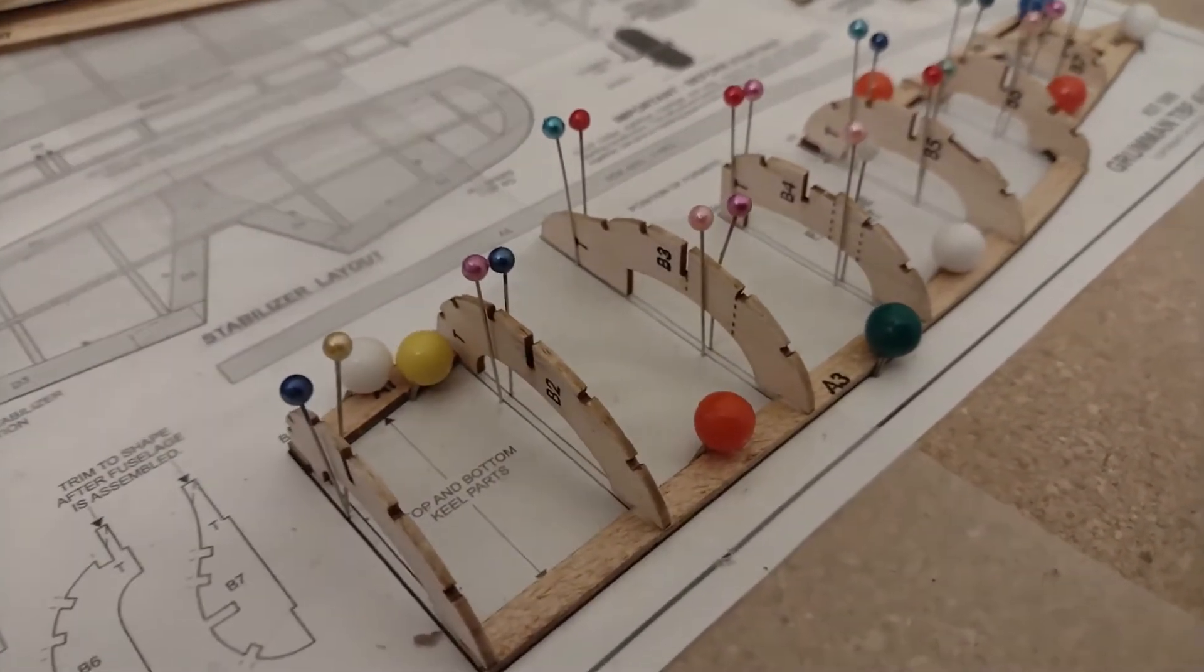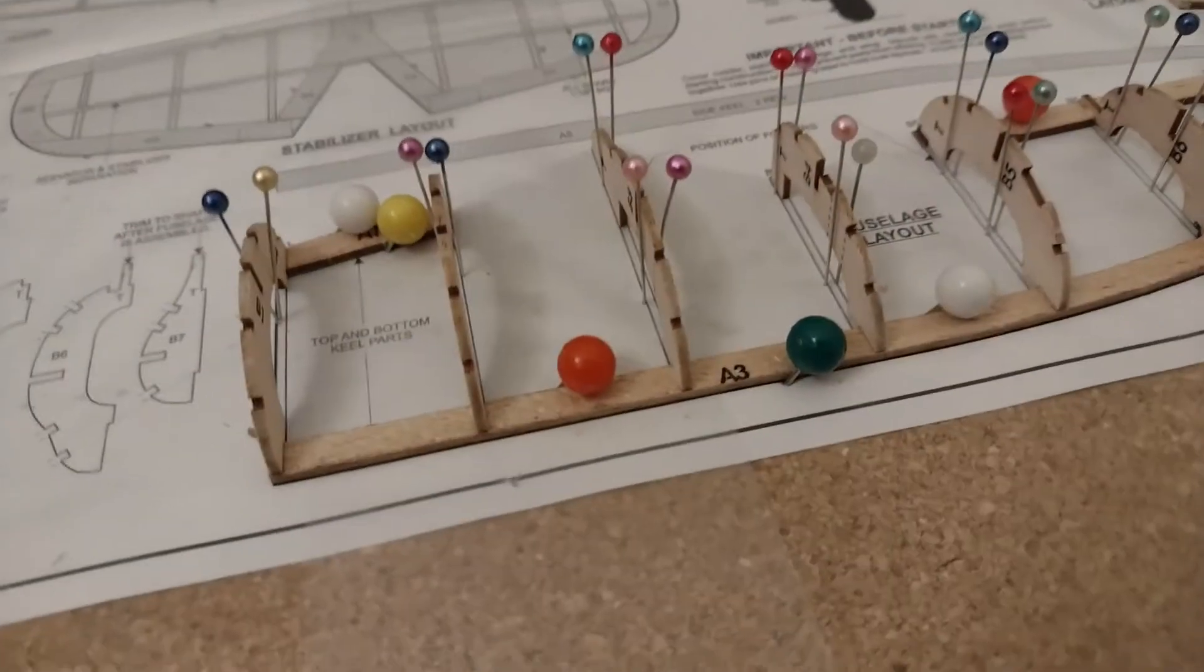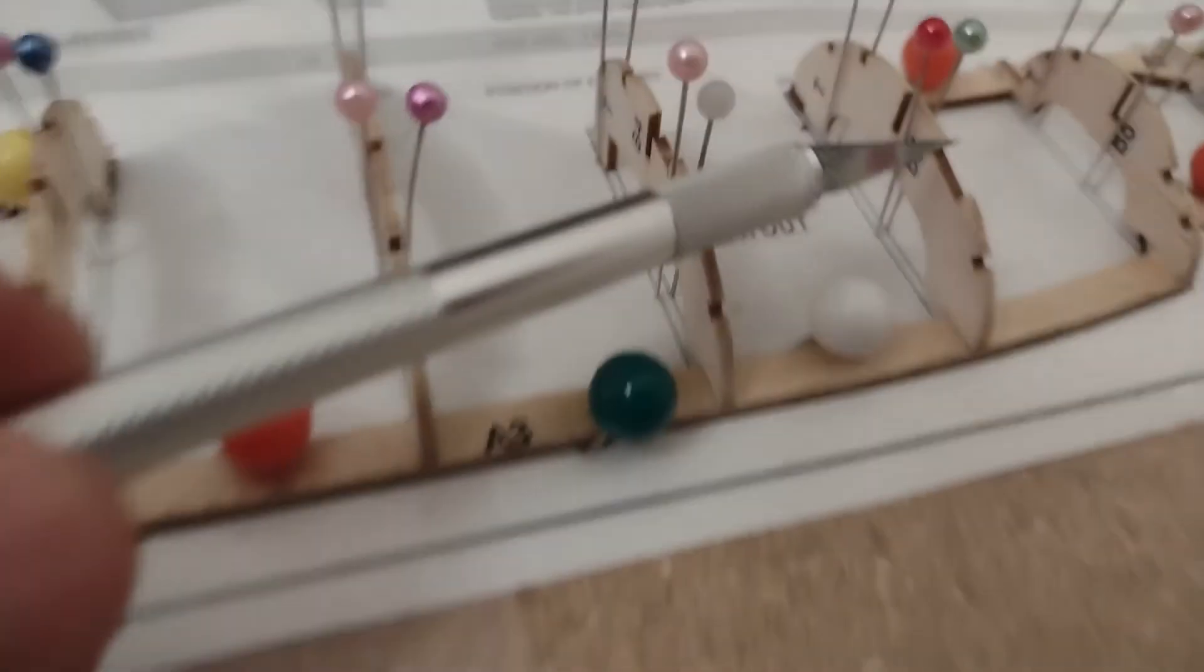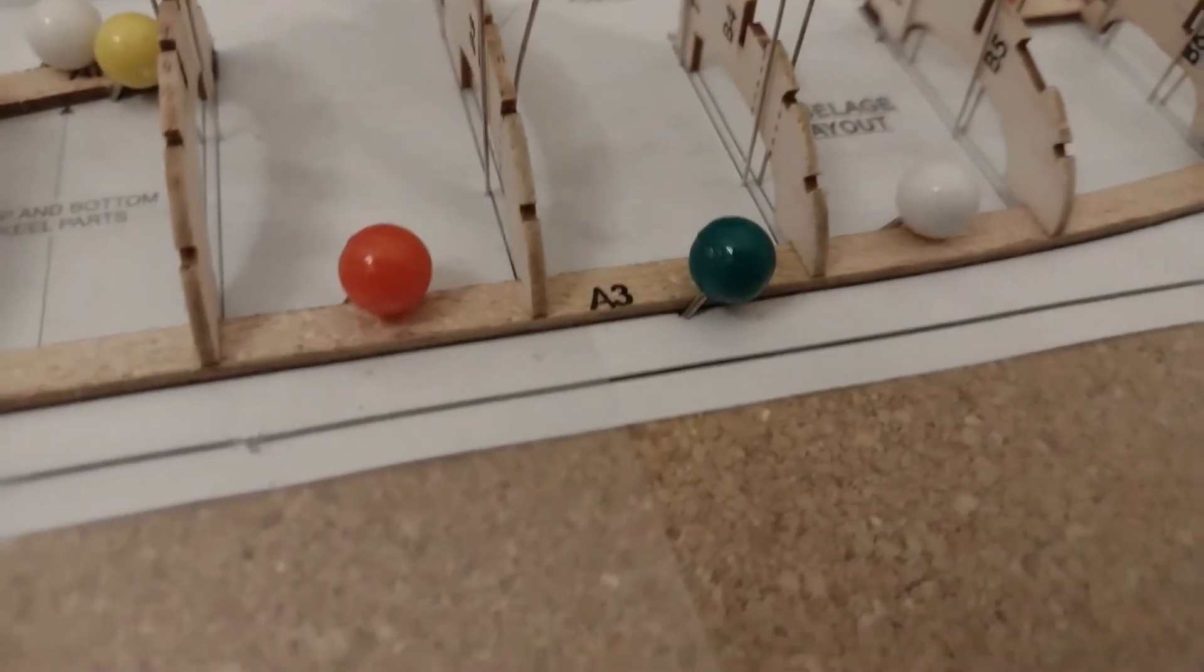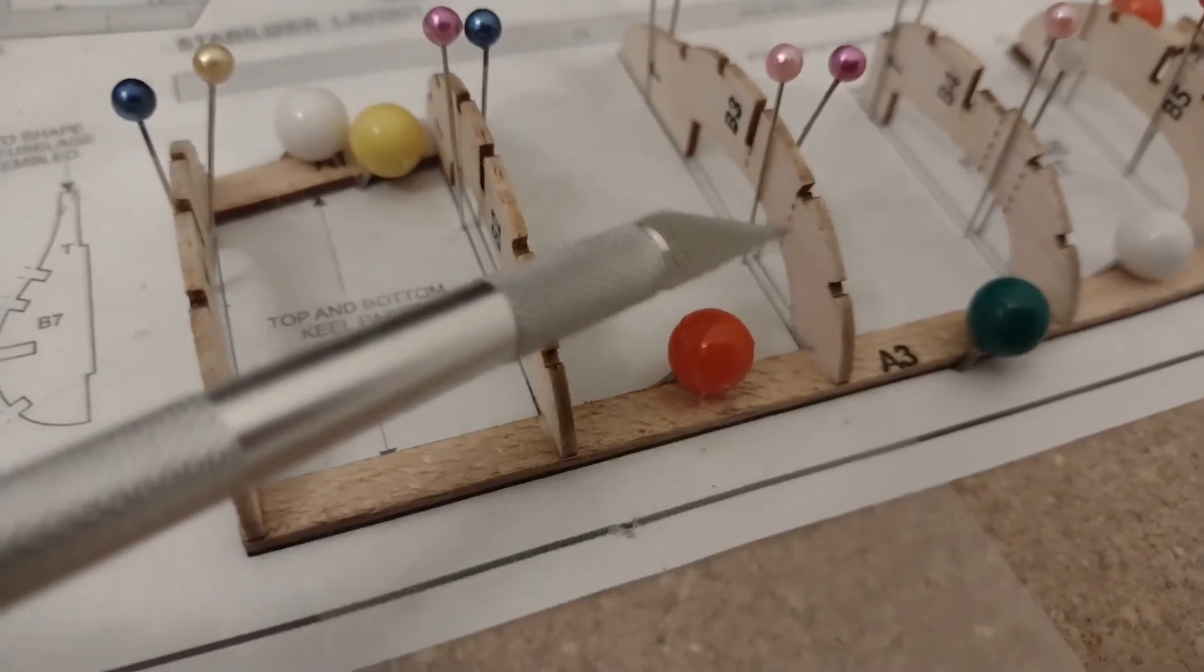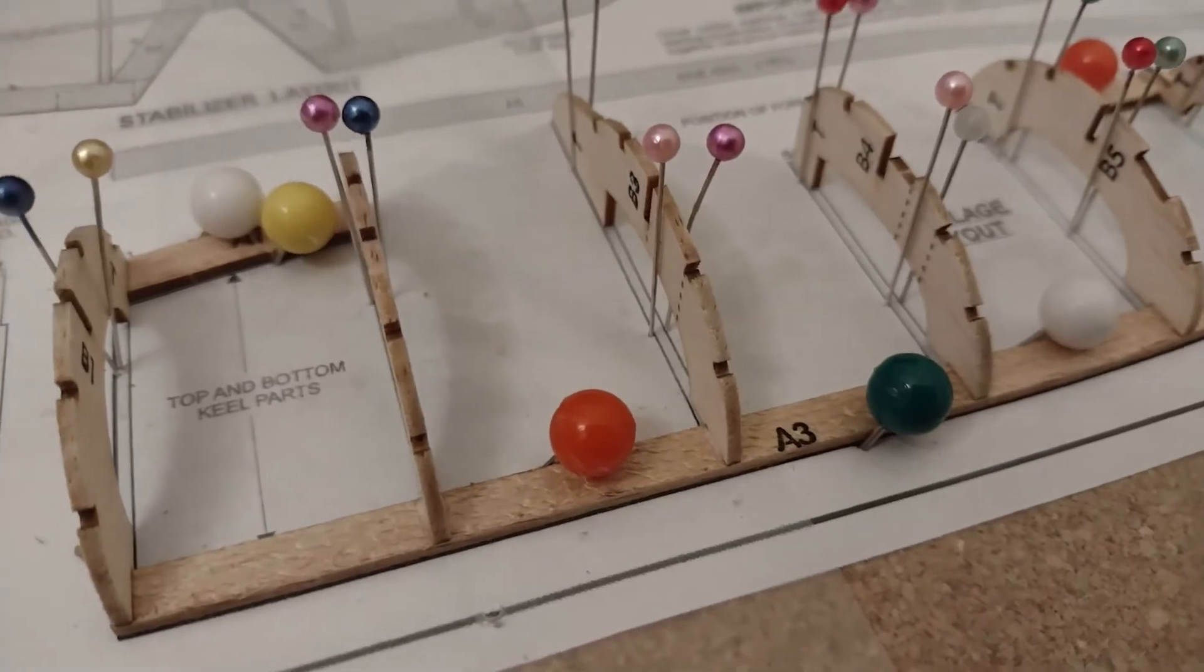One thing I'm puzzled by is that on some of the formers there's this kind of indentation here. I'm not sure what that is for. I do see that some formers have dotted holes that will be cut off. I assume that's where the wing will go through.